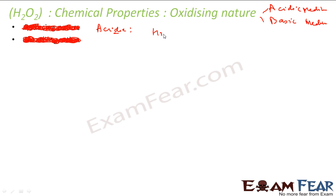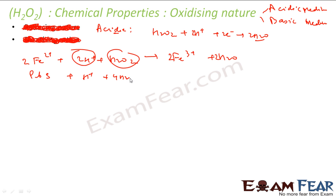Let's talk about the acidic media first. In acidic medium, H2O2 reacts with H+ and electrons to give 2H2O. For example, Fe2+ reacts with H+ and H2O2 in acidic medium to give Fe3+. In acidic medium, H2O2 is oxidizing the iron from Fe2+ to Fe3+.